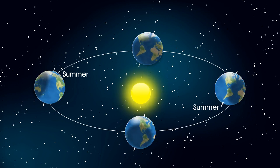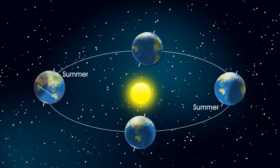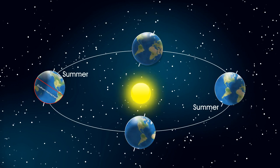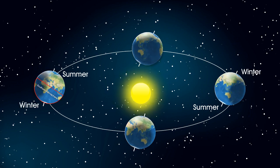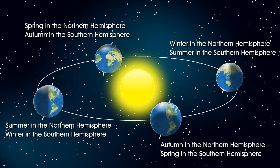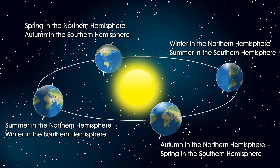At the same time, the Southern Hemisphere that is tilted away from the Sun receives slanting rays of the Sun, indicating winter. This is how we experience different seasons in the Northern and Southern Hemispheres at the same time.